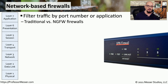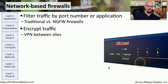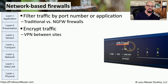A traditional firewall is able to control traffic based on the IP address and port numbers that are in use. Some of the newer next generation firewalls are able to go a step further and identify the applications that may be flowing across the network. Many firewalls can also act as a VPN endpoint for IPSec tunnels or communication from end users, allowing you to configure the firewall as the central point of security for all of your remote access devices.